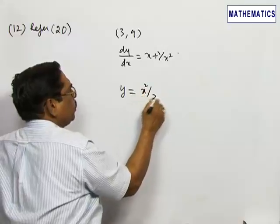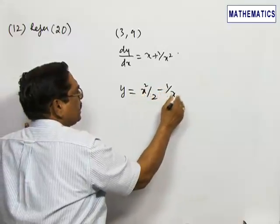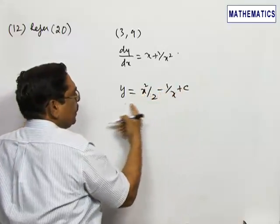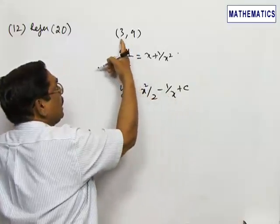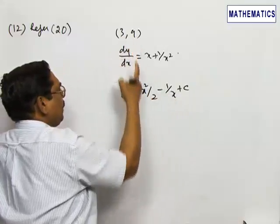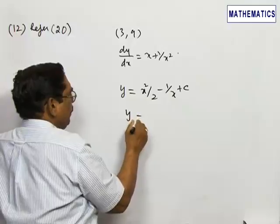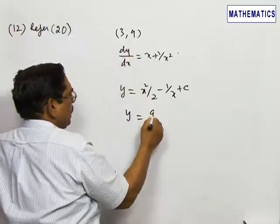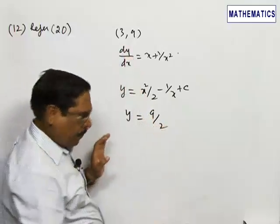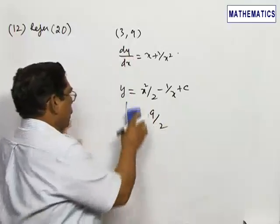The curve passes through (3, 9), therefore this point must satisfy this equation. Substituting x = 3 and y = 9: 9 = 9/2 - 1/3 + c.